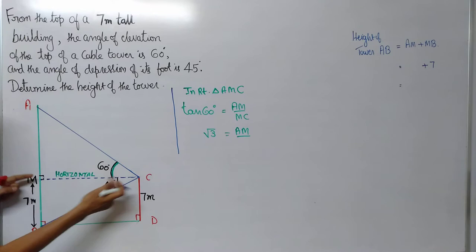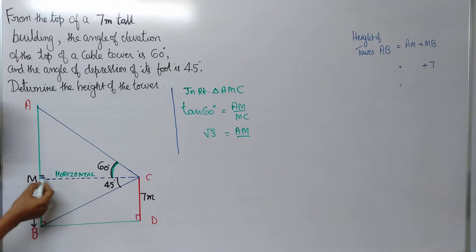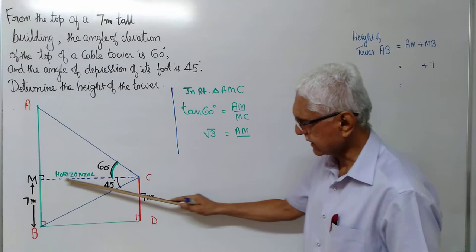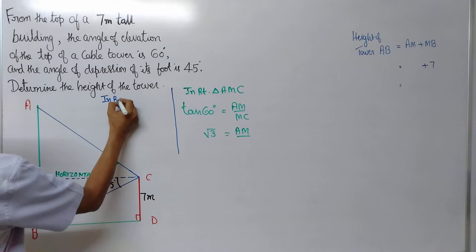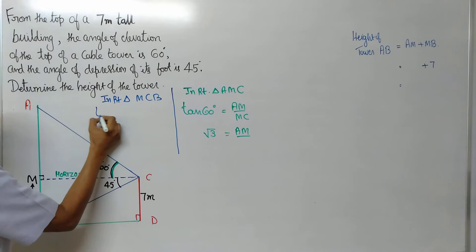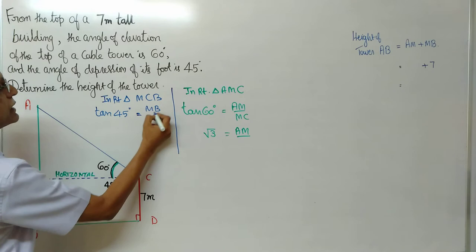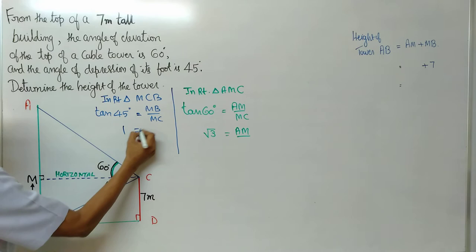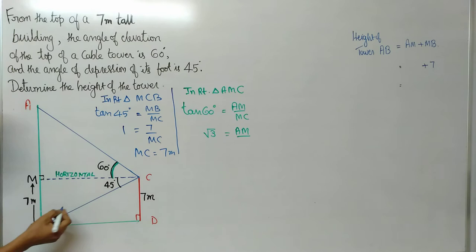Please observe, MC is a part of this right angle triangle. So can I consider the right angle triangle MCB and use tan 45? I will do it here. In right triangle MCB, tan 45 is equal to opposite side MB divided by adjacent side MC. Tan 45 is 1. MB is 7, divided by MC. MC is equal to 7 meters. So this we got 7 meters.